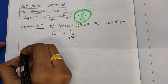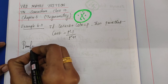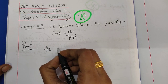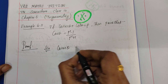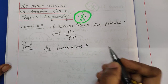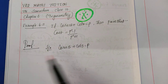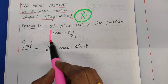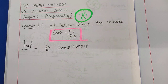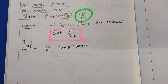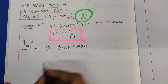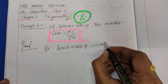Our given result is cosecant theta plus cot theta is equal to p. We are going to prove cos theta is equal to p squared minus 1 divided by p squared plus 1. Let's take this as equation number 1.